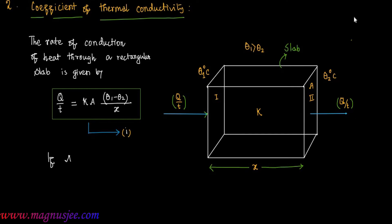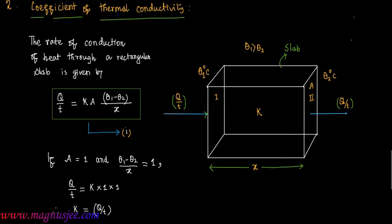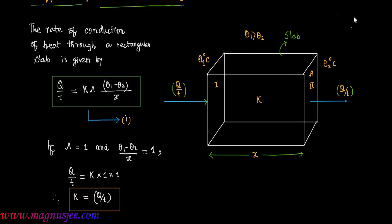If A equals 1 and the temperature gradient — that is, (theta 1 minus theta 2) divided by x — is also 1, then Q by T equals K times 1 times 1. Therefore, K equals Q by T, which is the rate of conduction of heat. So the coefficient of thermal conductivity is numerically equal to the rate of conduction of heat through unit area of cross section of a rectangular slab having unit temperature gradient across the solid.